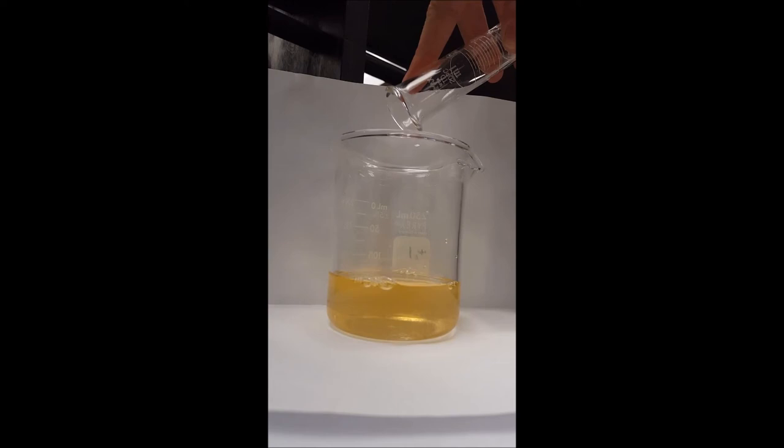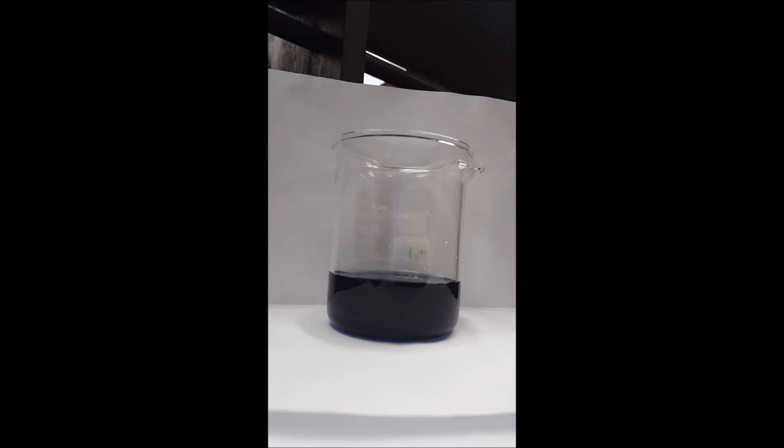Here we perform the Briggs-Rauscher reaction. Essentially, this reaction proceeds as it does because the mixture is in a state far from equilibrium. Iodine ions are involved as the color changes from yellow to blue. As this happens, energy is released gradually and the reaction oscillates between these two colors.